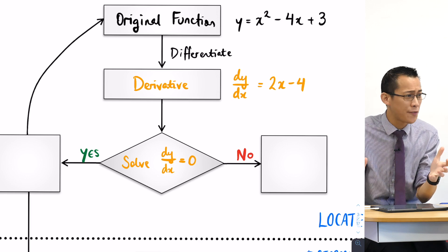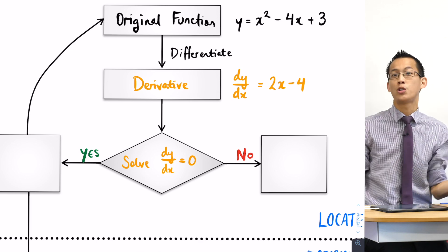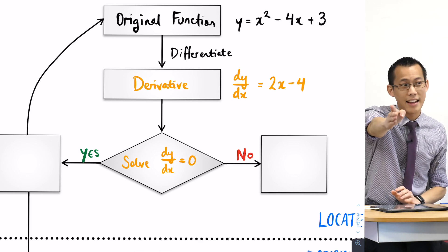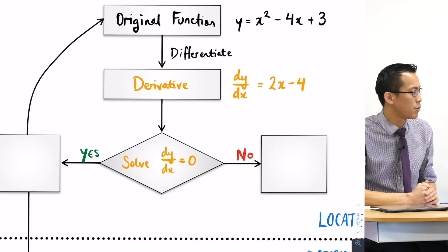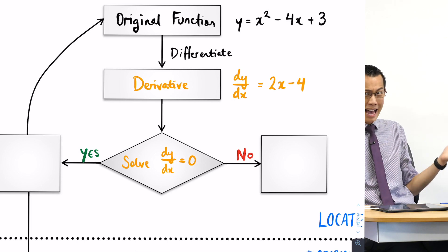Think of even simpler functions. We spent two weeks on a straight line. If it's not horizontal, any other straight line will never have a stationary point.